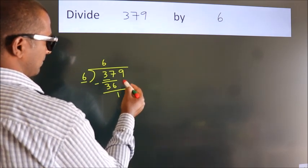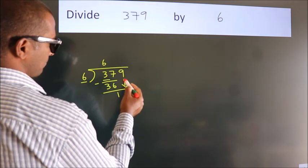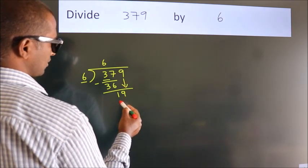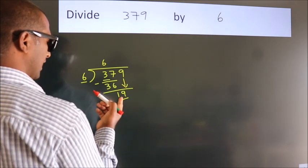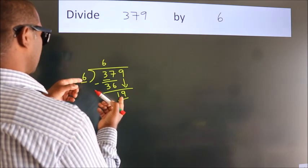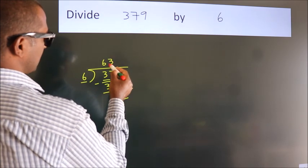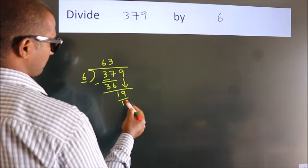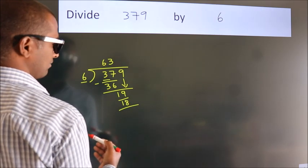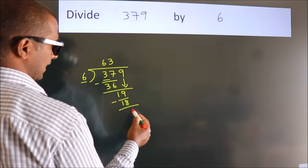After this, bring down the beside number. So 9 down. So 19. A number close to 19 in the 6 table is 6 times 3, which is 18. Now we subtract. We get 1.